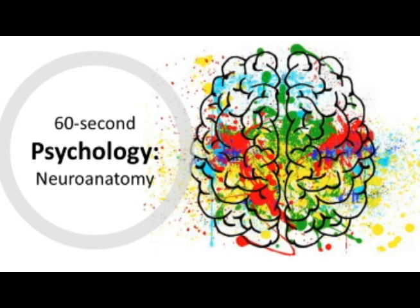Another part of the brain linked to aggression is the orbitofrontal cortex. This part of the brain is linked to rational thinking and regulates impulse control. People with reduced activity in this part of the brain are therefore less able to control aggressive impulses.